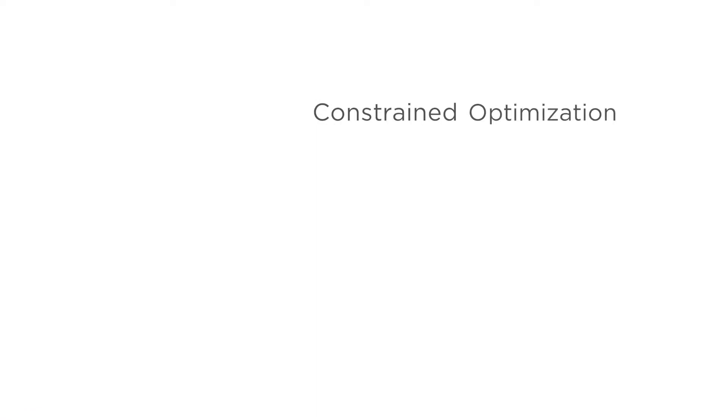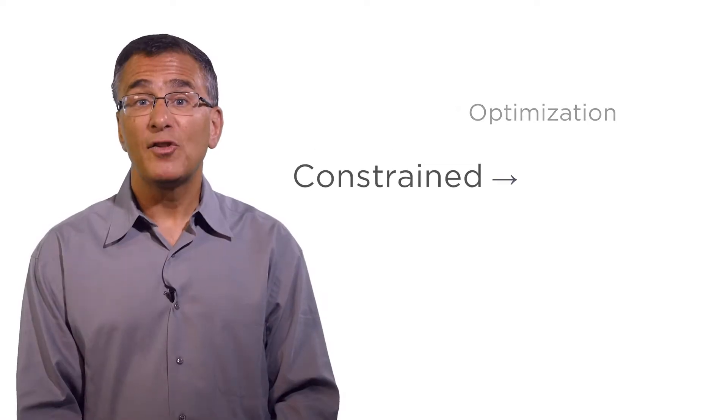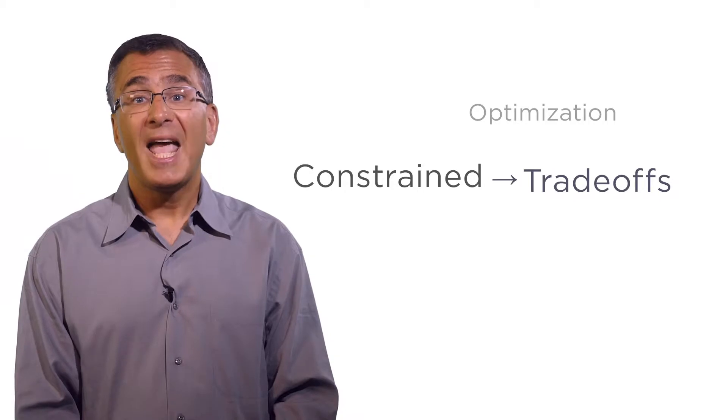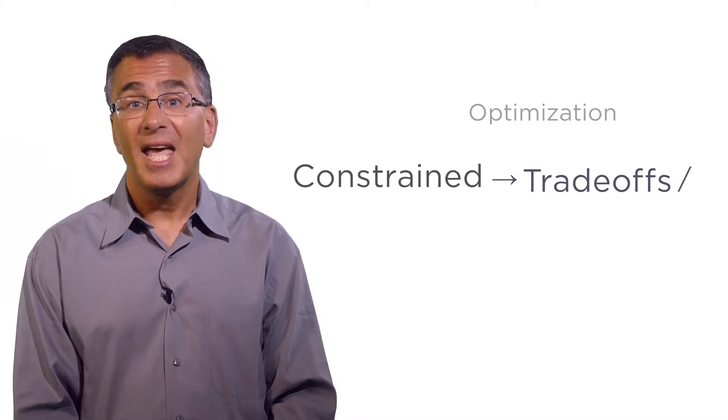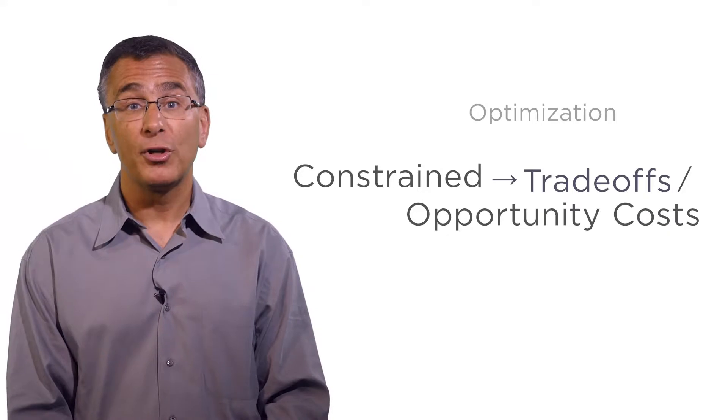In mathematics, we have a name for this: constrained optimization. Constrained is about trade-offs. Any decision that you take has an opportunity cost in terms of what else you could have done.